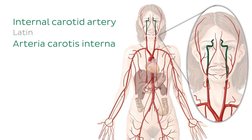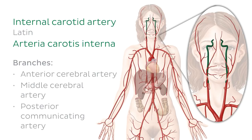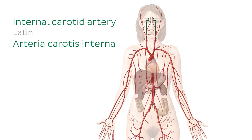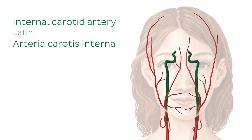Within the cranial cavity, the internal carotid arteries give off several branches, including the anterior cerebral artery, the middle cerebral artery, and the posterior communicating artery. Let's zoom in on our lady even further so that we can see some of the vessels I've mentioned a little bit more clearly.